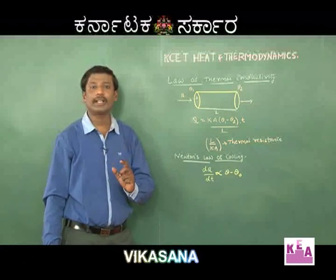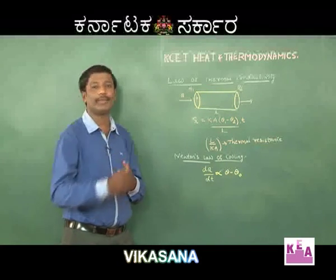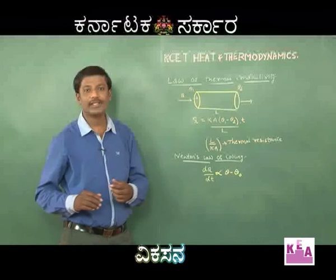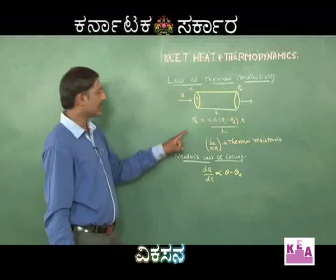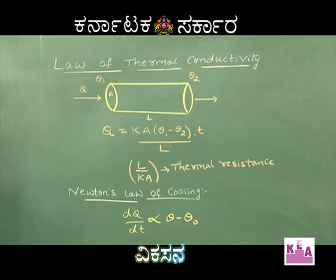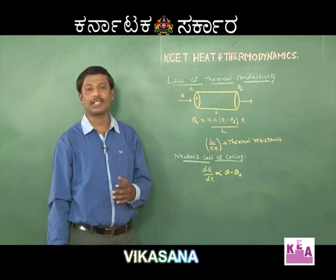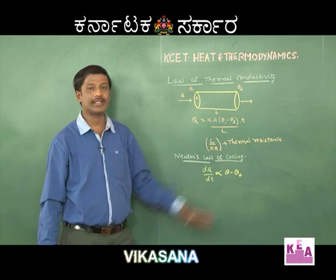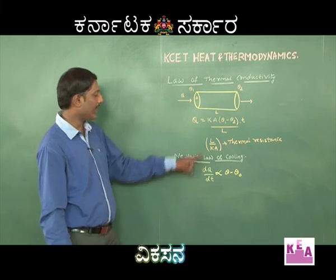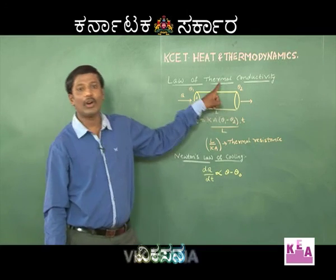The law of thermal conductivity gives the relation between heat energy flowing in the slab and the temperature difference, area, and length. Q equals K A (theta_1 minus theta_2) T divided by L. In a slab there is also opposition to the flow of heat, called thermal resistance, which is given by L divided by K times A.